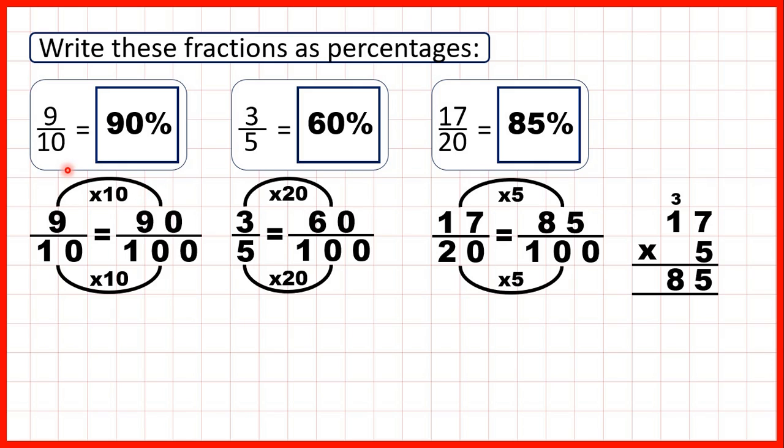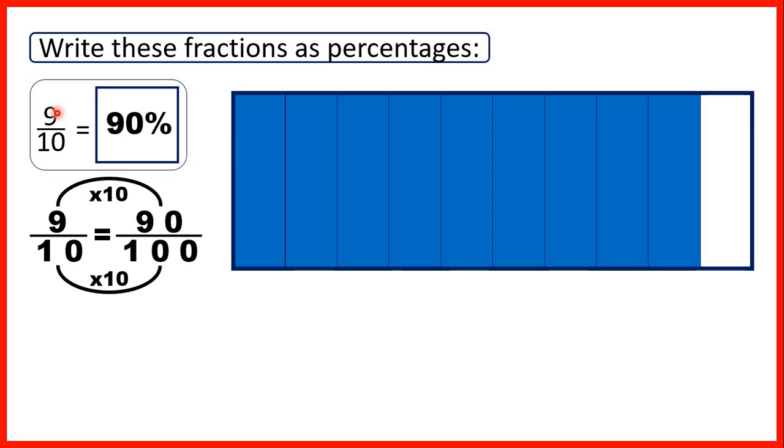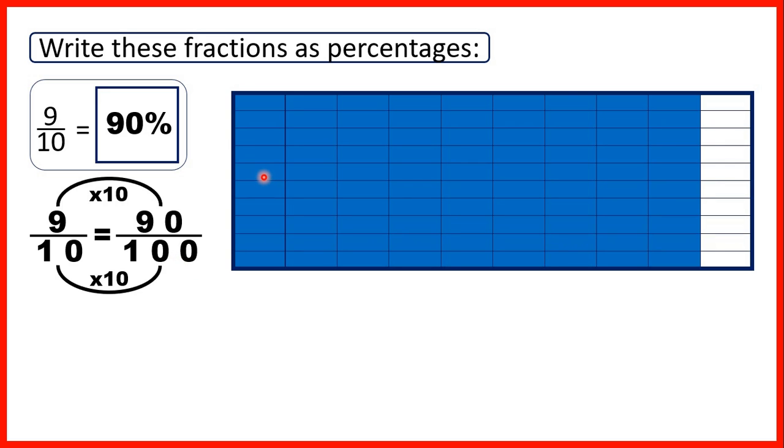So if we look at what we did here, first we had nine-tenths, so nine parts out of ten on our fraction bar. But a percentage is a fraction over a hundred, and we found that nine-tenths was equivalent to ninety-hundredths, so that's ninety percent.